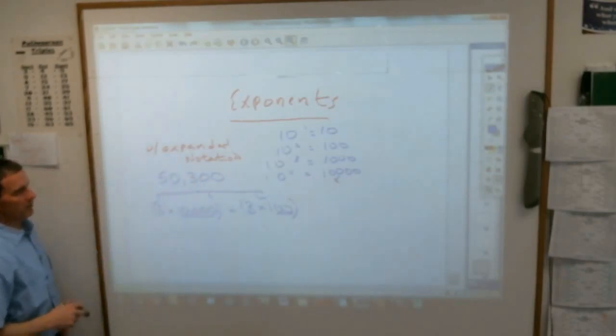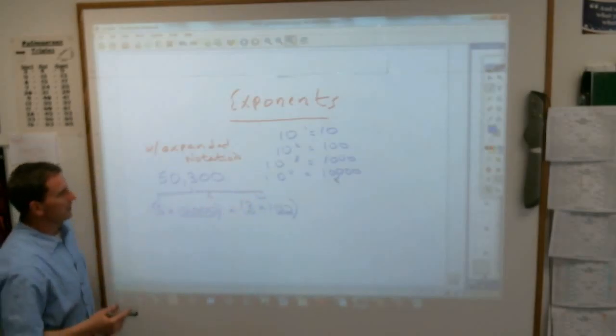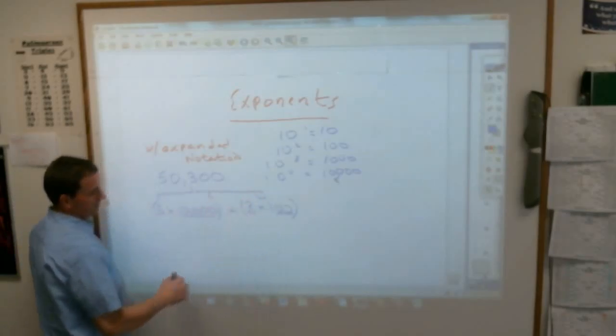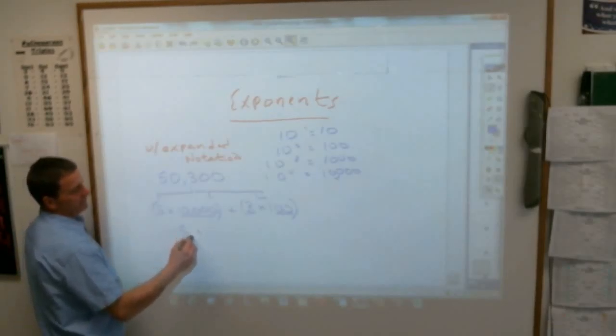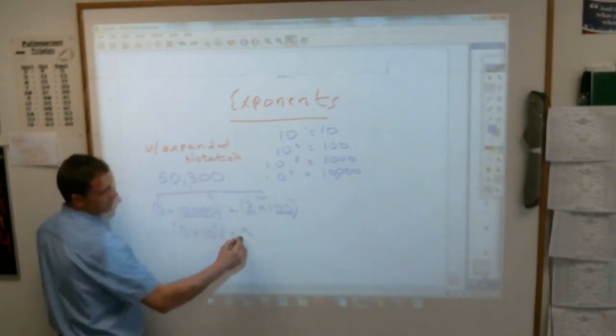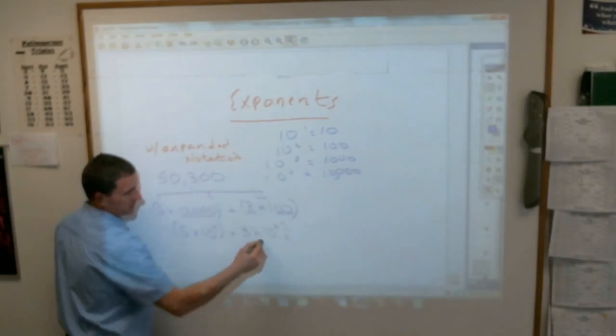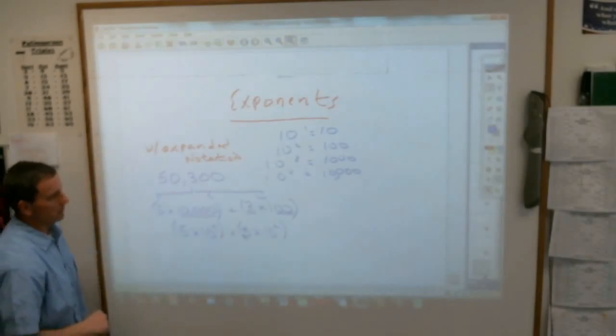So rather than writing these big long numbers, 100,000, 10, 1,000, maybe that was before. Rather than do that, you are going to write it as 5 times 10 to the 1, 2, 3, 4 zeros, fourth power, plus 3 times 10 to the second power. Are you with me? Are you getting what's shaking down here?